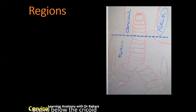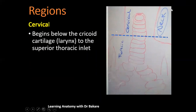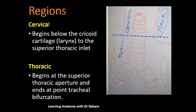The trachea has two basic regions. The cervical region begins from the cricoid cartilage down to the superior thoracic inlet — this is the neck region. The thoracic region begins from the superior thoracic inlet down to the level of T4–T5 thoracic vertebra, where the trachea bifurcates into two to supply the two lungs.